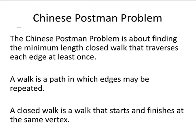Just to be clear about a few points, a walk is a path in which edges may be repeated and a closed walk is a walk that starts and finishes at the same vertex.